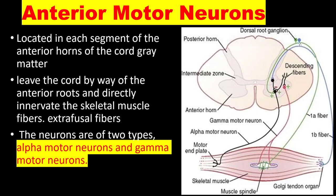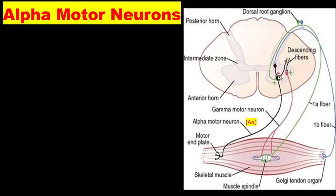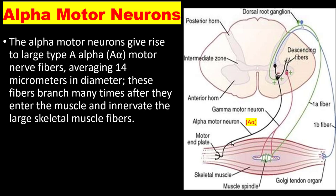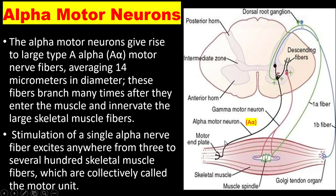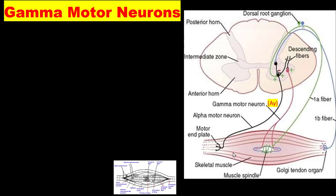Alpha motor neurons give rise to large type-A alpha motor neuron fibers with an average diameter of 14 micrometers. These fibers branch many times after entering the muscle and innervate the large skeletal muscle fibers — the extrafusal muscle fibers. Stimulation of a single alpha motor neuron excites anywhere from three to several hundred skeletal muscle fibers, which are collectively called the motor unit.